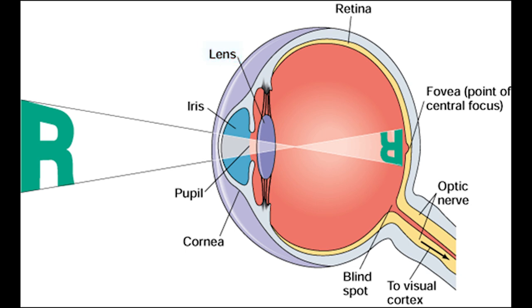I'll also point out the little stripey bits connected to the lens. Those are the suspensory ligaments that hold the lens in place. There are also some muscles around there, but more on those in a sec. Time for a helpful illustration of how the cornea and the lens work together to get light focused onto the back of the eye.